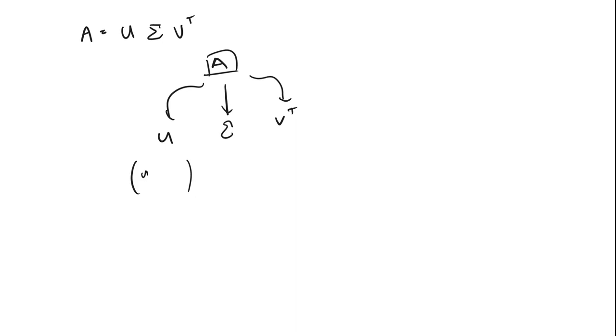U is going to be our left singular matrix. And then sigma is going to be our eigenvalues, or the square root of our eigenvalues. So square root of lambda 1 all the way down to the square root of lambda n. It's a diagonal matrix. And then V transposed, this is going to be our eigenvectors going along this way because it's transposed here. Let's dive into a little example.